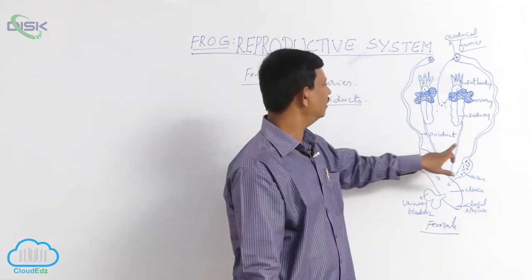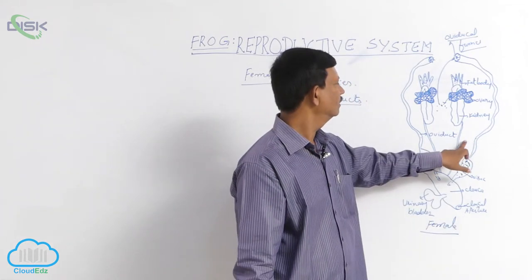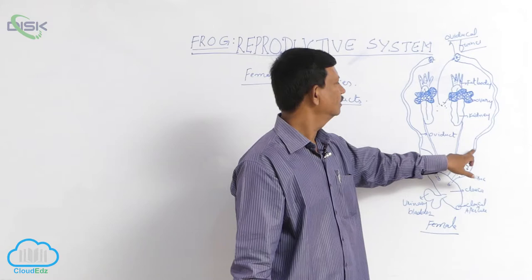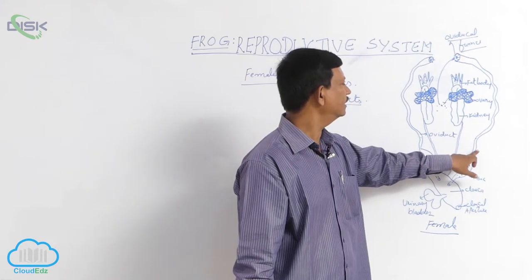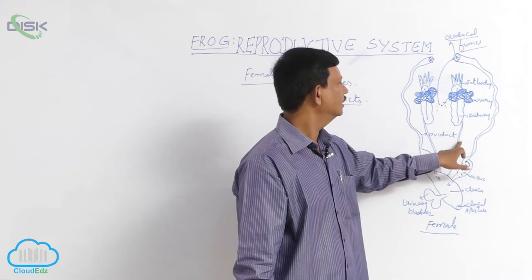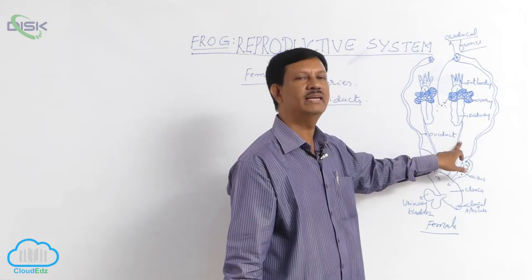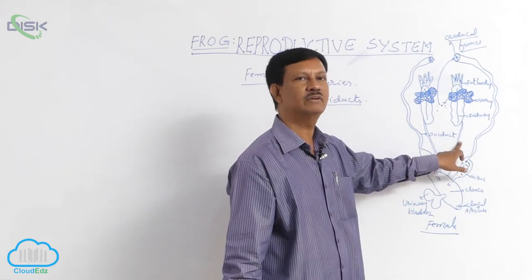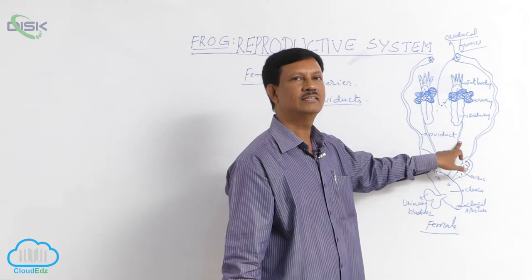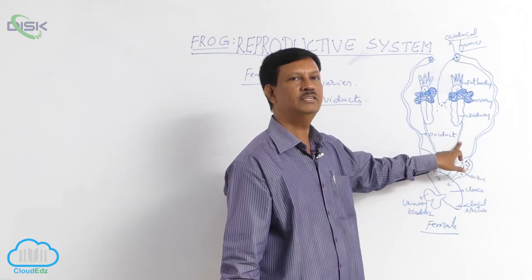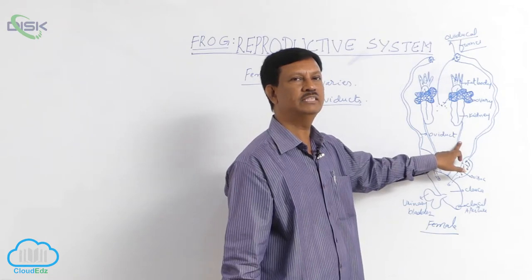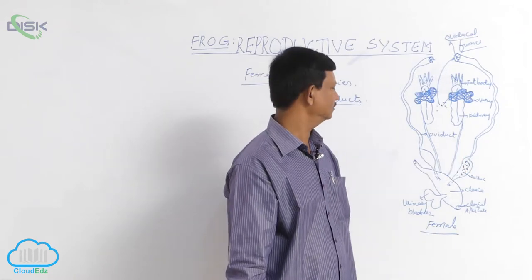But in male frog, there are no oviducts. The ureter transports the male gametes, which is why it is known as the urinogenital duct.